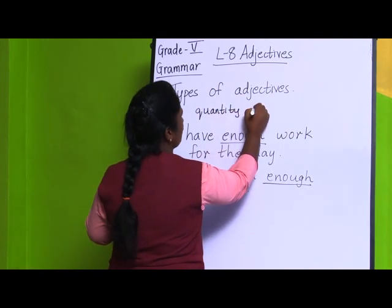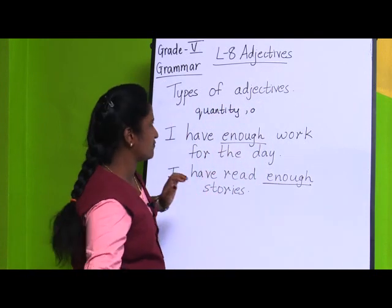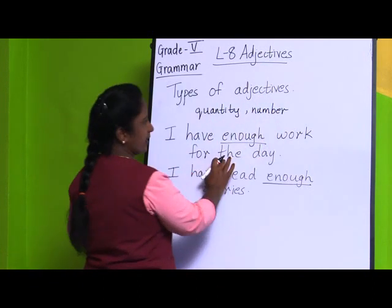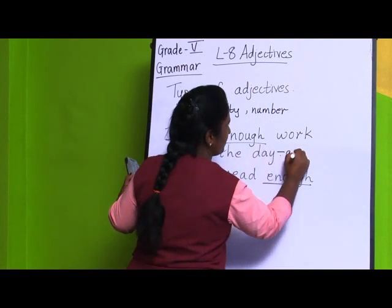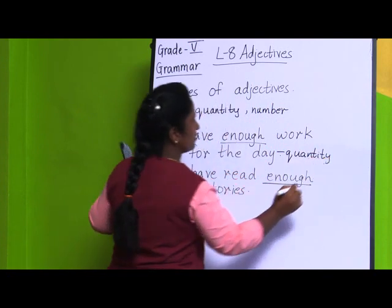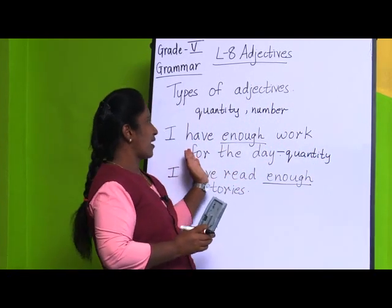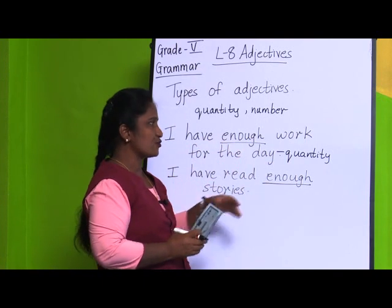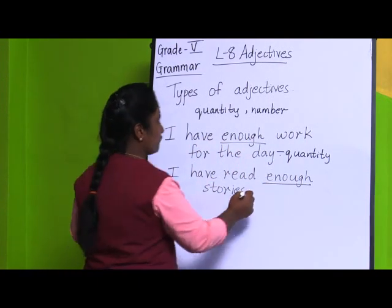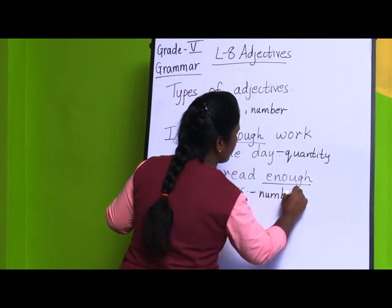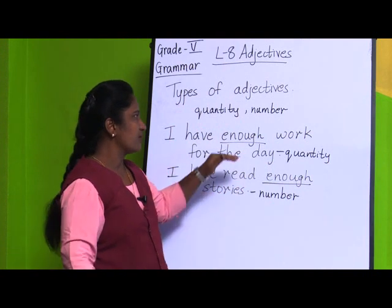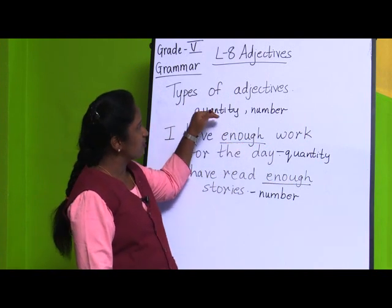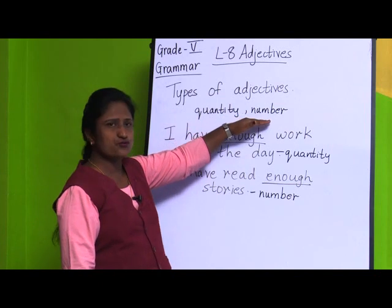For 'I have enough work for the day,' if you ask 'how much work,' you get the adjective of quantity. For 'I have read enough stories,' if you ask 'how many stories,' you get the adjective of number. So one word like 'enough' can be used for both types.